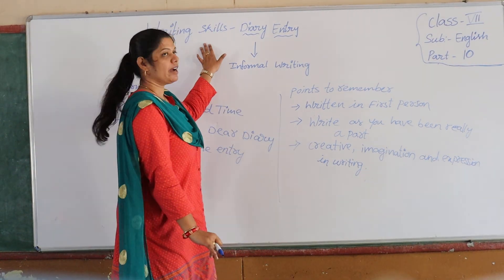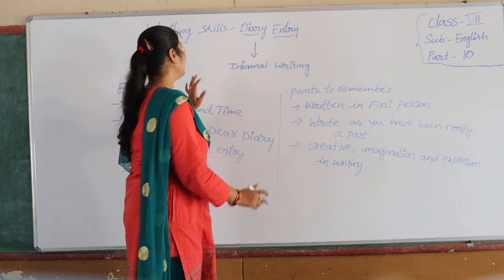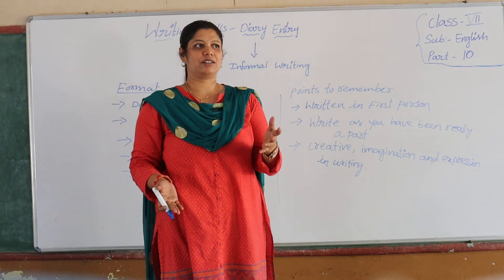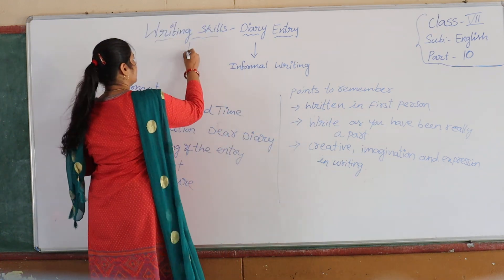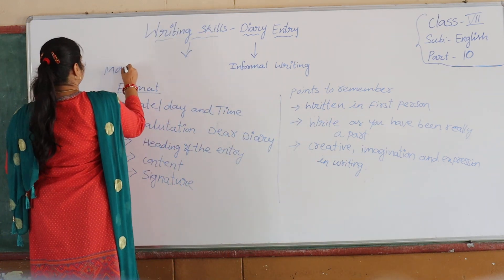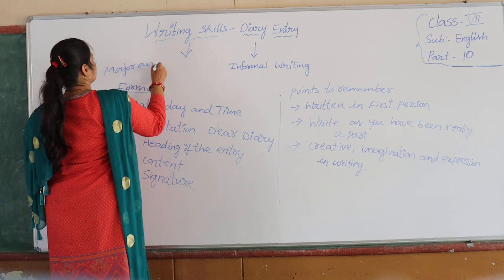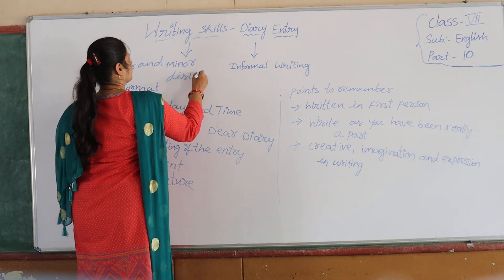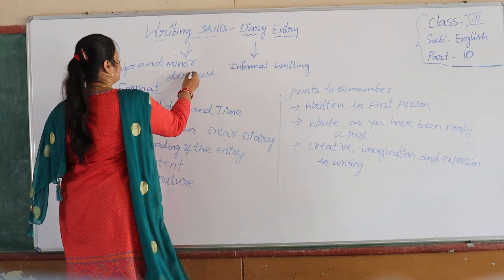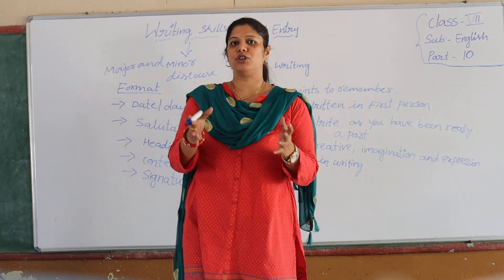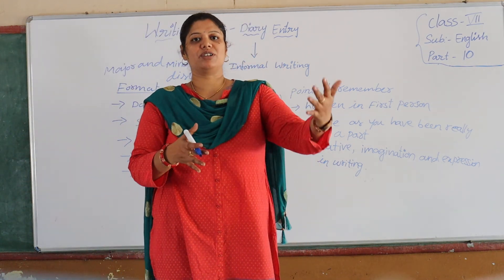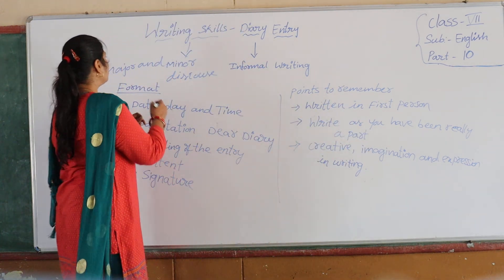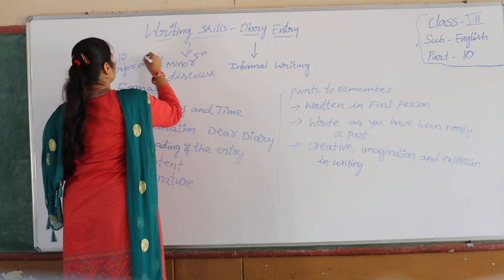Okay, children, after our grammar part, we are going to deal with our writing skills, which is a very important part for higher classes. This comes under major and minor discourse in your exam. So mostly up to 8th class, you get this for 12 and 8 marks. When you come to 9th and 10th, it's 10 and 5 marks. Major discourses are for 10 marks and minor discourses for 5 marks.